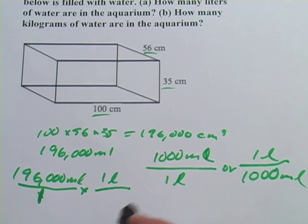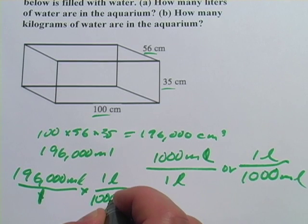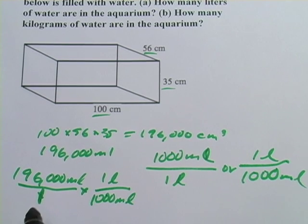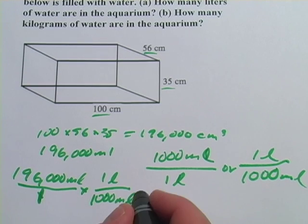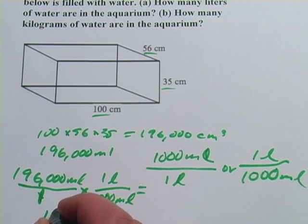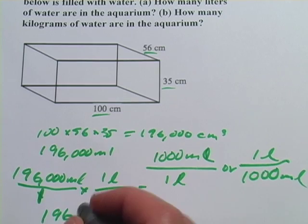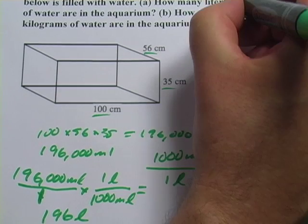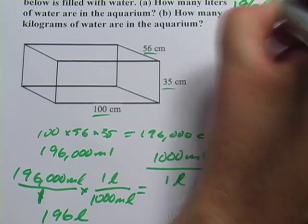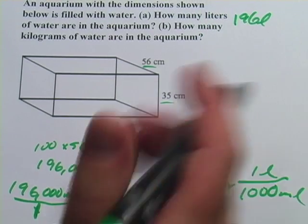So that's 1 liter, 1,000 milliliters. So essentially what I'm doing here is dividing by 1,000. And what this comes out to is 196 liters. So for A, 196 liters. That's part A.